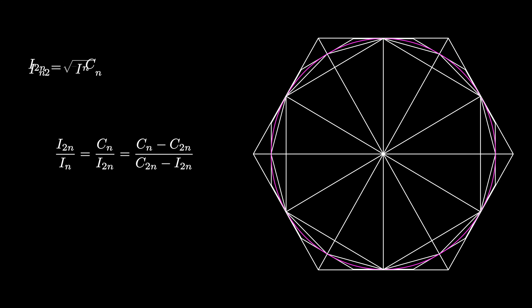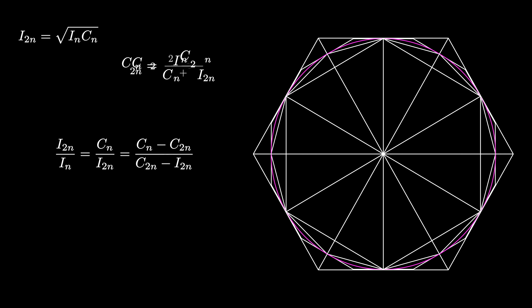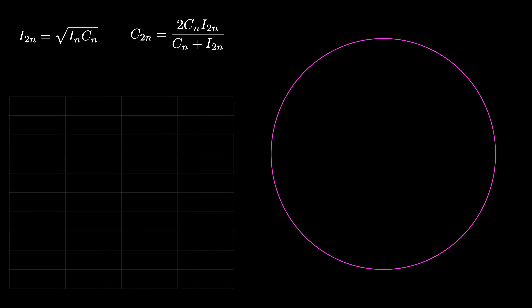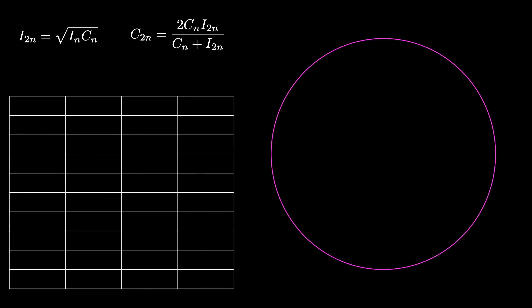Therefore, i sub 2n over i sub n equals c sub n over i sub 2n, and that equals (c sub n minus c sub 2n) over (c sub 2n minus i sub 2n). From the first equality, i sub 2n equals the square root of i sub n times c sub n. The second equality gives us c sub 2n equals 2 times c sub n times i sub 2n over (c sub n plus i sub 2n). The first equation says the area of the inscribed 2n-gon is the geometric mean of the inscribed and circumscribed n-gons, and the second says the area of the circumscribed 2n-gon is the harmonic mean of the circumscribed n-gon and the inscribed 2n-gon. These two formulas allow us to recursively compute polygon areas when n is a power of 2.